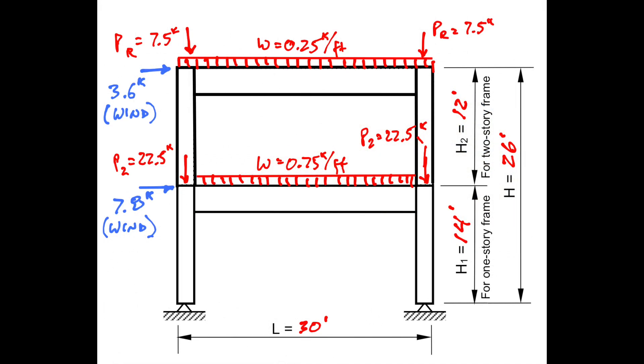So here we have the gravity load shown in red. We have 250 pounds per foot, 0.25 kip per foot on the roof level as a uniform load from those edge beams. 750 pounds per foot, 0.75 kips per foot on the floor from the edge beams. 7.5 kips concentrated from the perpendicular girders that are framing into those columns and 22.5 kips from the perpendicular girders at the floor level.